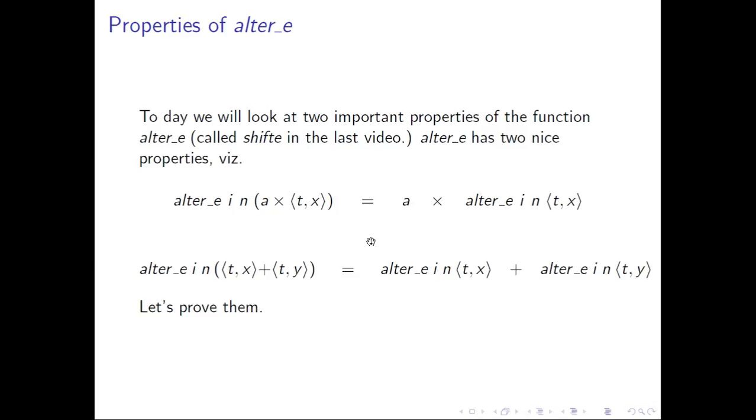The second property is that ALTAEIN distributes over cash flow addition. So if you add two cash flows and then alter them, it's the same as altering each cash flow and then adding together the results.